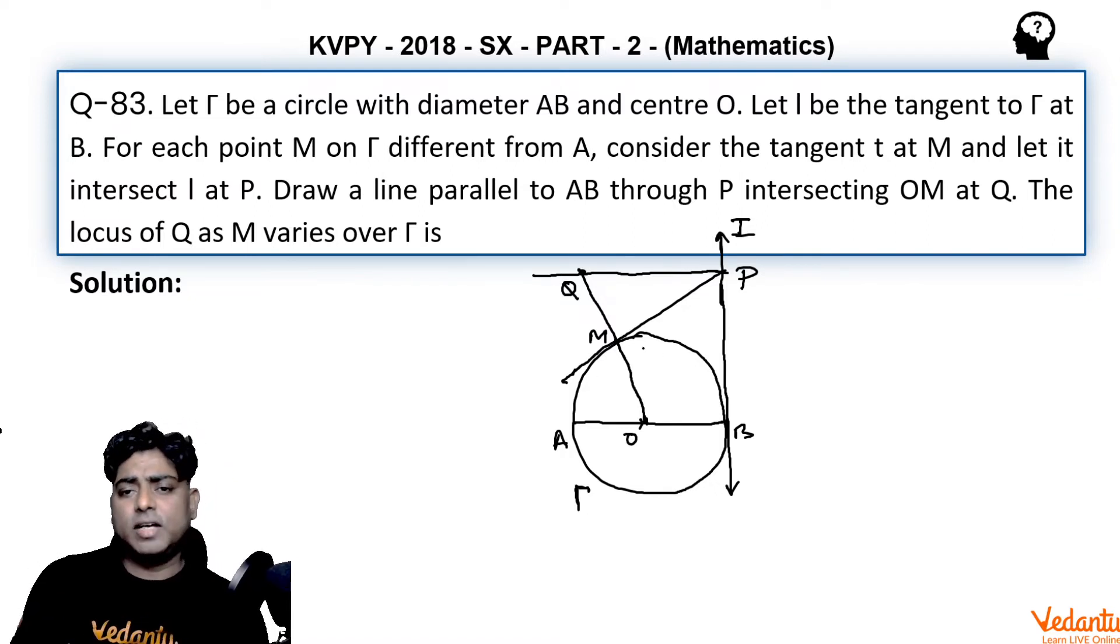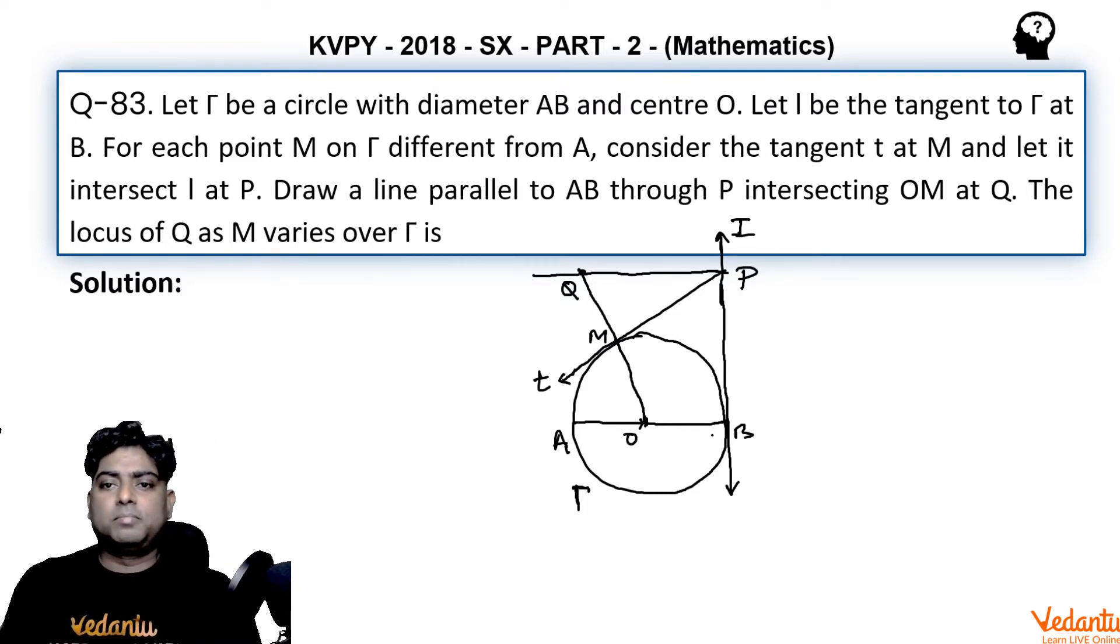Now we have to find the locus of Q as M varies over Γ. M is a variable point, B is fixed, circle is fixed, the tangent at B (line I) is fixed, O is fixed, A is fixed. M is variable, so at different M you will get different line t. As M varies, t varies, then P varies, and as P varies, Q varies.